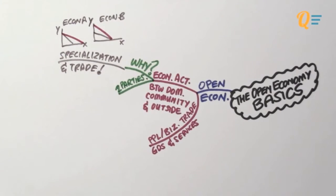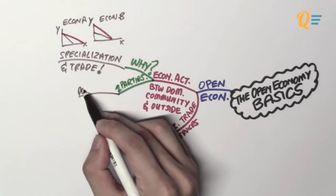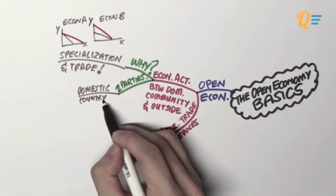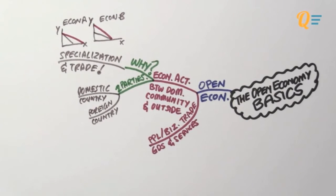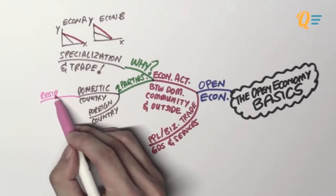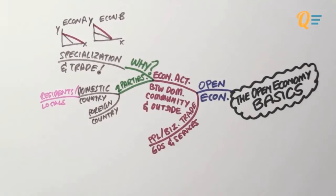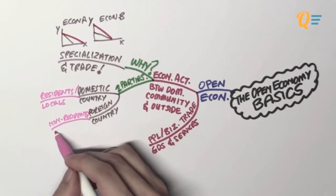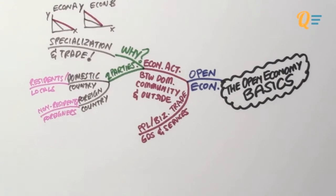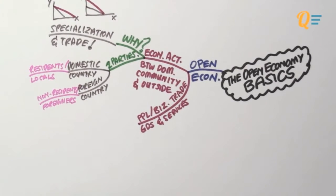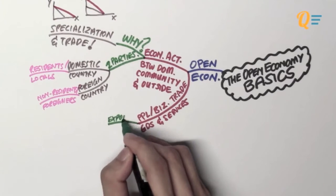So this economic activity in general will be between two parties. So we have the domestic country, which is the home country, and we have the foreign country, or what you can call the other country. So the people that live in a domestic country are known as residents or locals. I think you should already know this by now. And people from the other countries are known as non-residents or foreigners. In Singapore, we love to call them foreign talent. So I'm introducing you these terms because I'll be using them quite frequently in the explanations later.